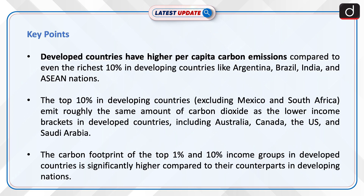Moving on to the key points: developed countries have higher per capita carbon emissions compared to even the richest 10% in developing countries like Argentina, Brazil, India, and ASEAN nations. The top 10% in developing countries, excluding Mexico and South Africa, emit roughly the same amount of CO2 as the lower income brackets in developed countries including Australia, Canada, the US, and Saudi Arabia.